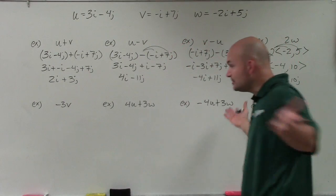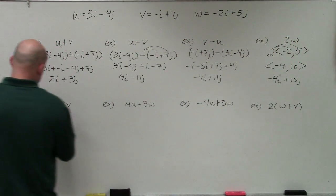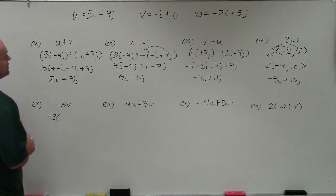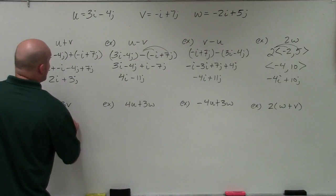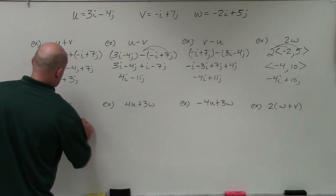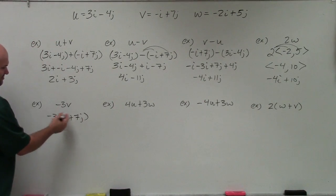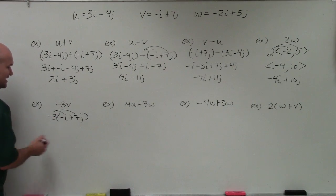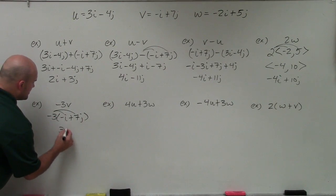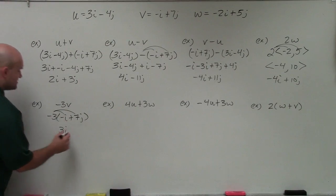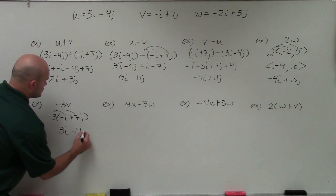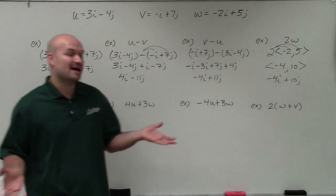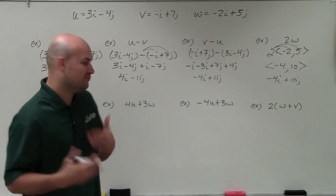Now we're just doing a negative scalar. For negative 3v, you can keep it as a linear combination: negative 3 times negative i plus 7j. Distribute to both coefficients — negative 3 times negative 1 is positive 1, so 3i; negative 3 times 7 is negative 21j. You don't really have to write them in component form, but I kind of prefer it.